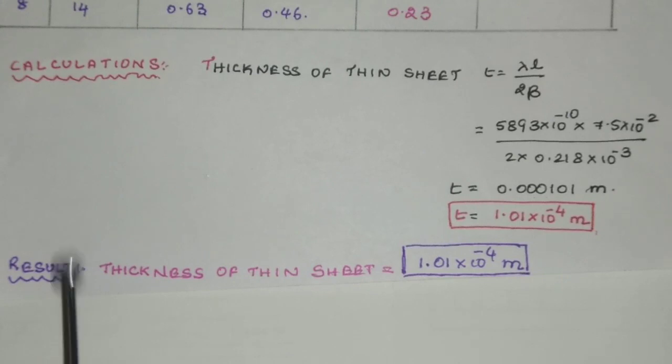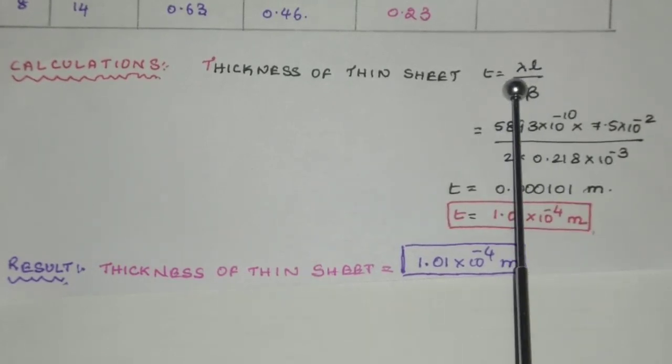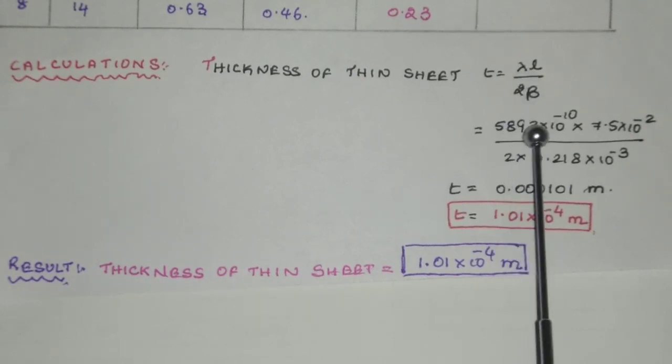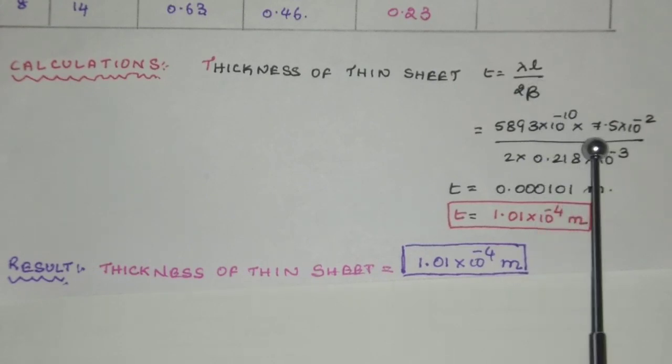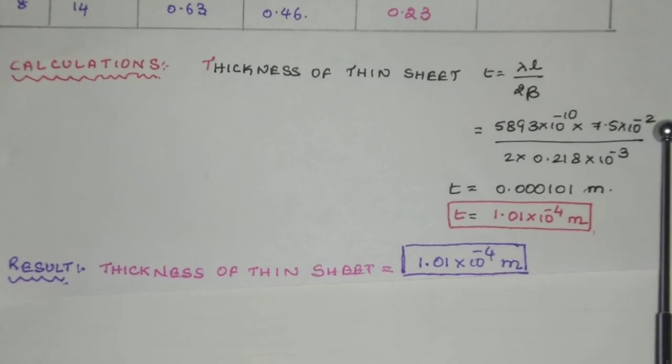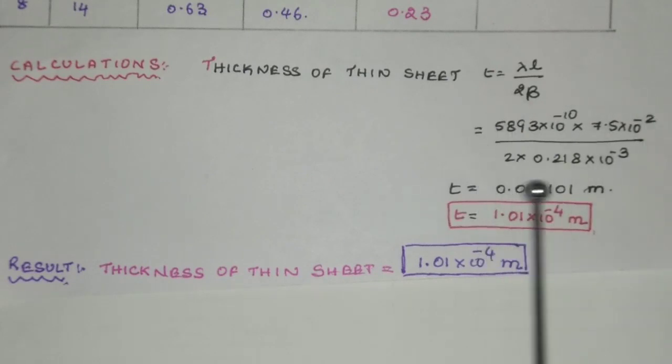Now we can calculate the thickness of the thin sheet using the formula λL divided by 2β, where lambda is the wavelength of the light used, 5893 × 10⁻¹⁰ m, L is the length of the air wedge, 7.5 × 10⁻² m, and beta is the fringe width, 0.218 × 10⁻³ m. With this calculation, the value of t is 1.01 × 10⁻⁴ m. Therefore, the thickness of the thin sheet is 1.01 × 10⁻⁴ m.